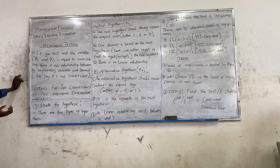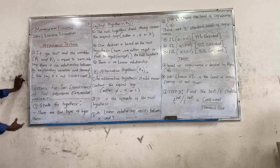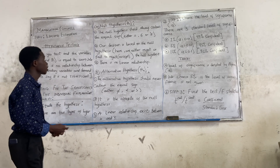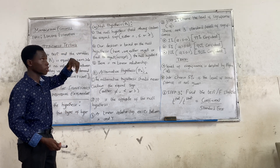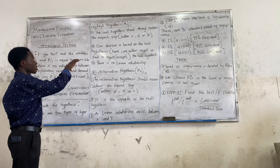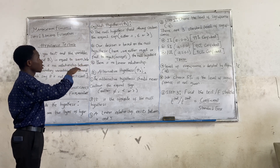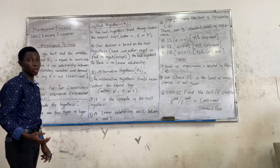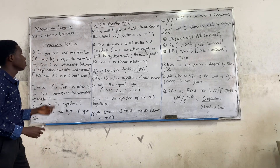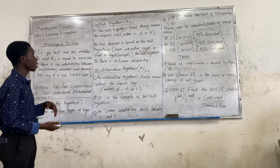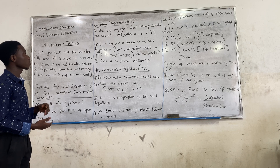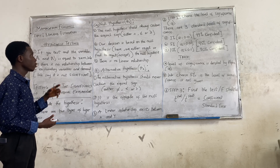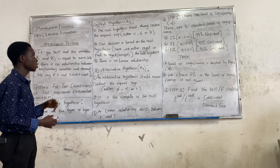We have five steps before you get an answer. The first step is to state the hypothesis. There are two types of hypothesis: the null hypothesis and the alternative hypothesis. The null hypothesis is denoted by a capital H with a subscript zero. The null hypothesis should always contain the equal sign — either equals, less than or equal, or greater than or equal. Our decision is based on the null hypothesis; we either reject or fail to reject the null hypothesis.